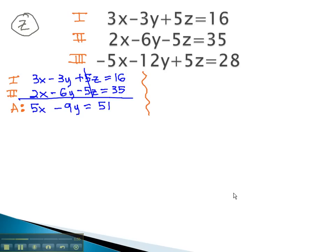Now what we're going to do is use a different pair of equations to eliminate the z again. Is there another pair of equations we can use to eliminate the z? You may notice that equations 2 and 3, with a negative 5z and positive 5z, would quickly be able to eliminate the z. So let's use equations 2 and 3.